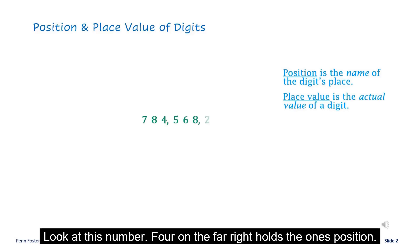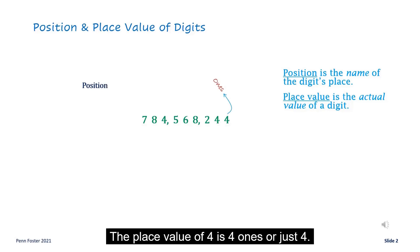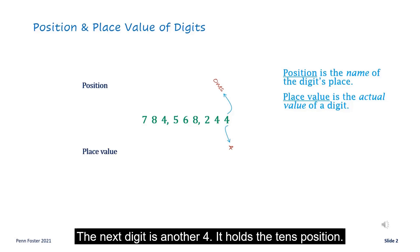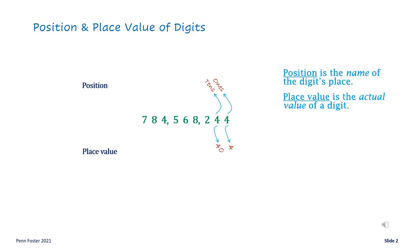Look at this number. The 4 on the far right holds the ones position. The place value of 4 is 4 ones, or just 4. The next digit is another 4. It holds the tens position, and its value is not 4 — it's 4 tens, or 40.